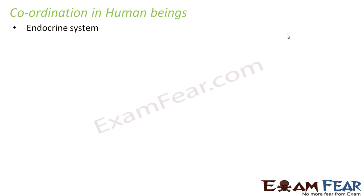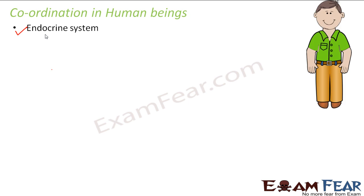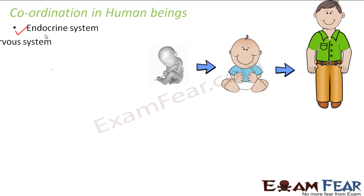In human beings, the first system which takes care of coordination is the endocrine system. This system handles the slower body processes — processes which are relatively slow, for example cell growth. When we see a small kid growing into an adult, it doesn't happen overnight — it takes time. The next system is the nervous system, which takes care of relatively faster processes, for example our movements and heartbeat.